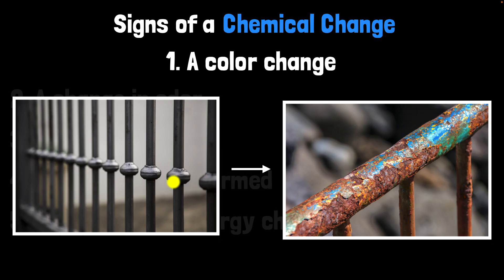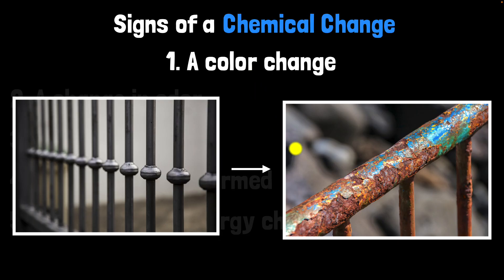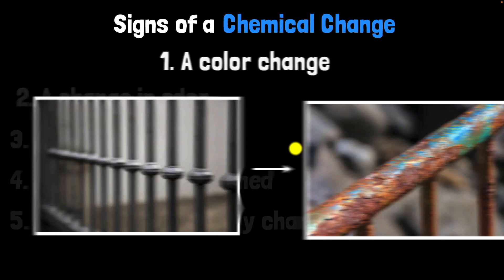Let's consider rusting. Iron is a grayish metal, but rust is reddish. So when a new substance — the rust — is formed, a color change has occurred. Sometimes a color change happens when chemical changes happen.